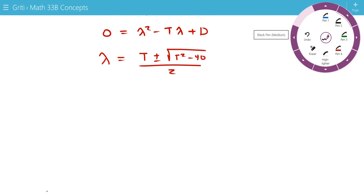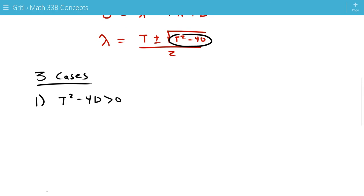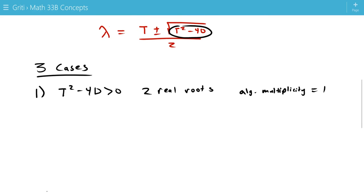And this shows us that we have three different cases for our eigenvalues, depending on the sign of what's under the square root. So, our three cases are: the first case is that T² - 4D is positive. So, we get two real roots. And each of these roots have what's called an algebraic multiplicity of 1. So, λ1 and λ2, both the eigenvalues have an algebraic multiplicity of 1. That means they only show up once.